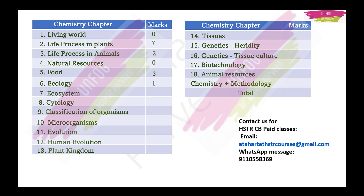Ecology — 1 question; Ecosystem — 3 questions; Cytology — 3 questions; Classification of Organisms — 4 questions; Microorganisms — 2 questions; Evolution — 1 question; Human Evolution — 1 question; Plant Kingdom — 2 questions; Tissues — 0 questions; Genetics/Heredity — 2 questions; Tissue Culture — 1 question; Biotechnology — 4 questions; Animal Resources — 4 questions. Adding all these gives 40 marks for biology.